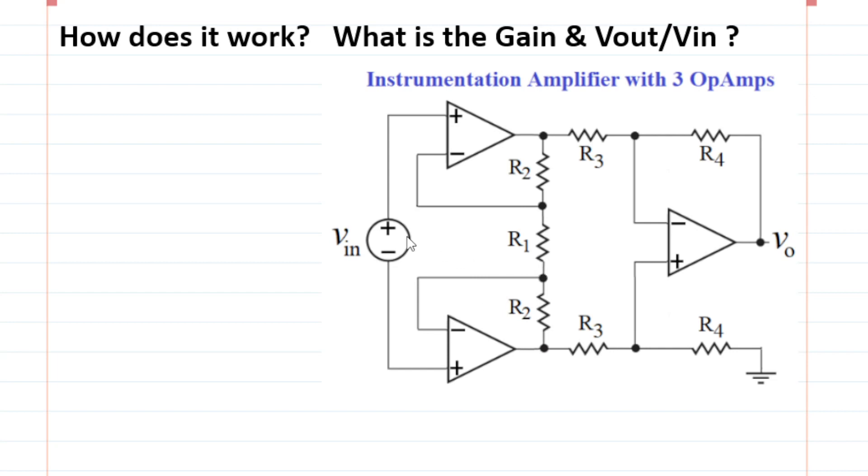Okay, so we want to see how this works and what is the gain or what is V out. Let's just quickly write what we can do. So in this case, you can see these two op-amps are assumed to be operating in linear region of operation.